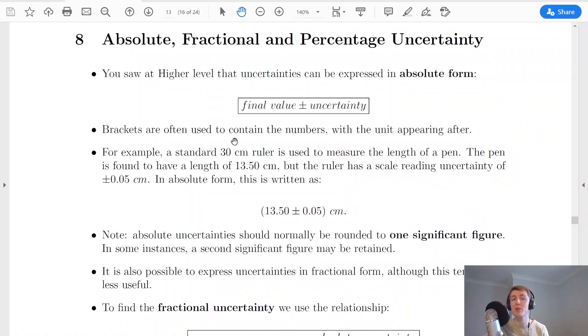Now we're going to kick off by looking at absolute uncertainties first of all. You should remember from higher physics that uncertainties can be expressed in what we call absolute form. This means writing down a final value plus or minus the uncertainty. We can also use brackets to contain these numbers so you could have brackets either side of this expression with the unit appearing after and that means you don't have to write the unit twice.